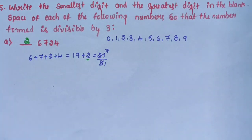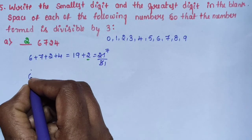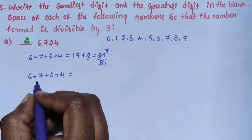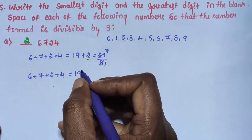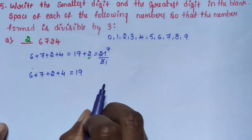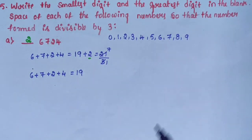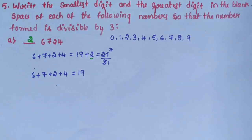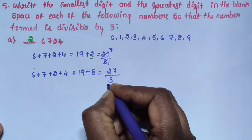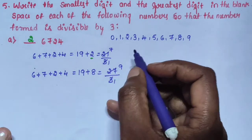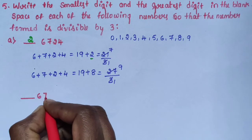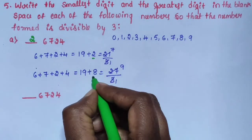Now write the greatest digit. The sum of the given digits is 19. Adding 8: 19 plus 8 equals 27, and 27 is divisible by 3. Therefore, the greatest digit is 8.